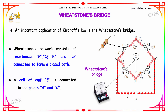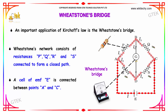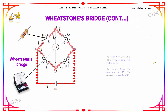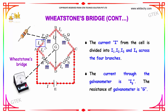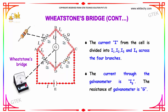The Wheatstone network consists of resistances P, Q, R, and S, connected to form a closed network with a galvanometer inside. A cell of EMF E is connected between points A and C. The current I from this cell is divided into I1, I2, I3, and I4. It's subdivided into four branches and converted into multiple currents. The current through the galvanometer is IG and the resistance of the galvanometer is G.